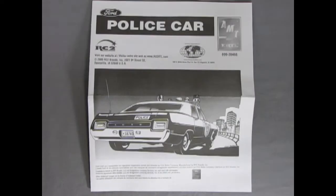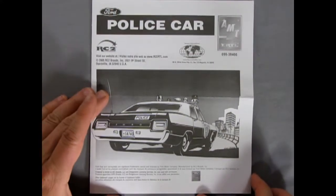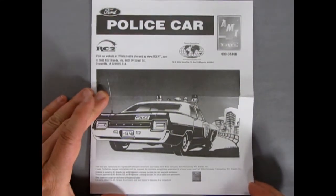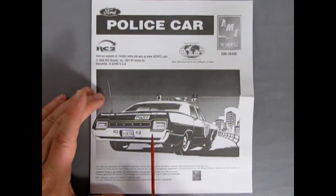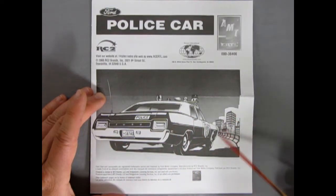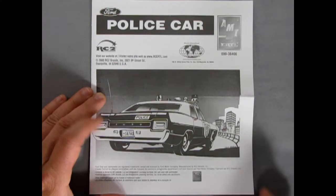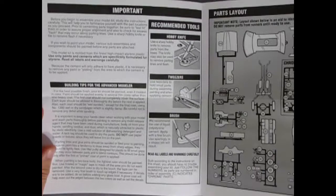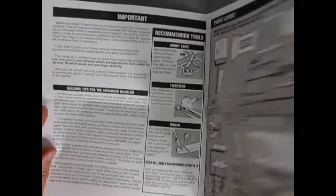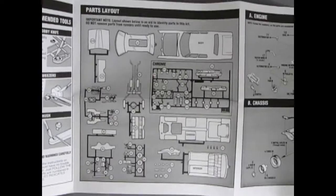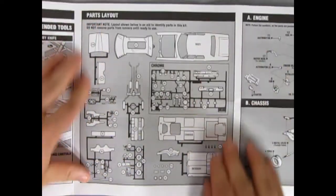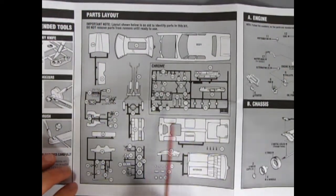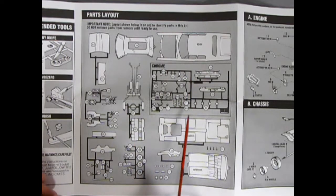Here we've got the instruction sheets. As you can see, we got that great drawing of our squad car in action going down the streets of Chicago or wherever they're going. This is a big fold out just like a Mad Magazine. There's the important stuff we need to know as well as a parts layout, which is good. I think all instruction sheets should have these.